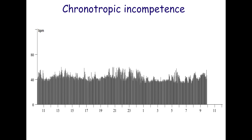In this patient, ambulatory ECG monitoring shows a minimum heart rate of 34 beats per minute. The mean heart rate is 43 beats per minute. The maximum rate is 62 beats per minute. This is a great example of sinus bradycardia with chronotropic incompetence.